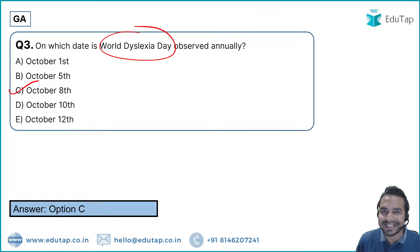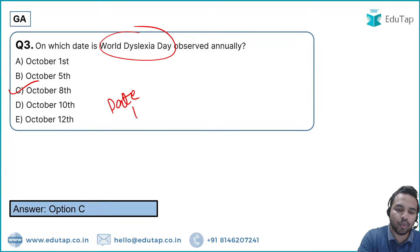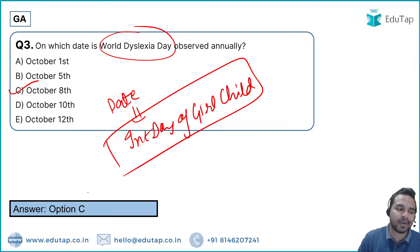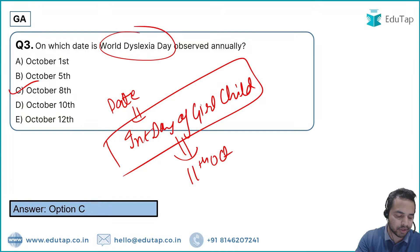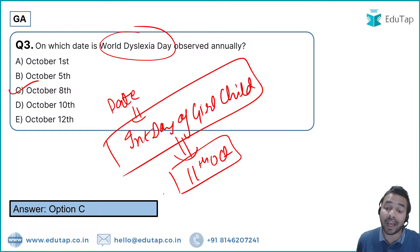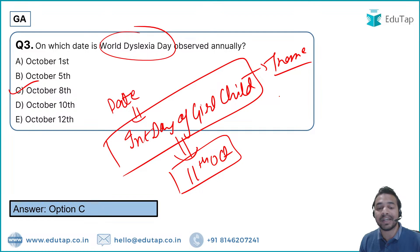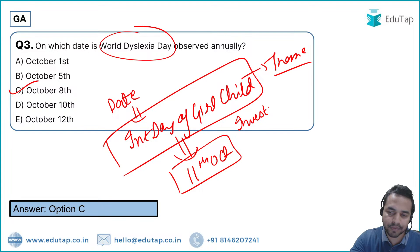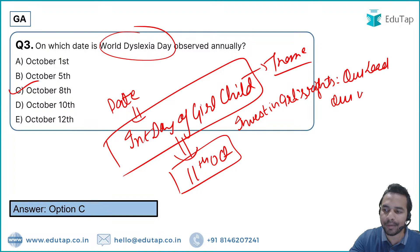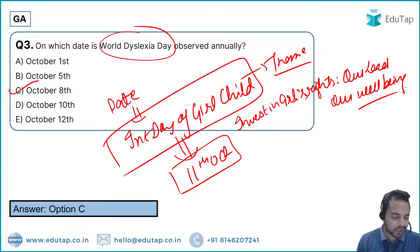Question 4: On which date do we celebrate the International Day of the Girl Child? The correct answer is 11th October. Whenever you cover important days, remember the theme. The theme for the International Day of the Girl Child 2023 was 'Invest in Girls' Rights: Our Leadership, Our Well-being.' Well done to Rohit, Rani, and Neha who gave the right answer.